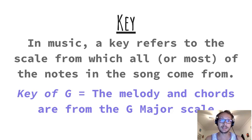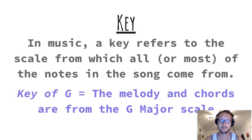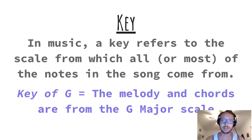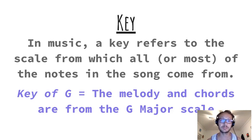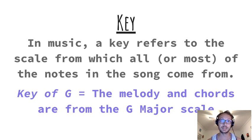A key in music refers to a scale from which all or most of the notes in a song come from. Songs can change key at any point, but the idea is that if a song is in the key of G, we can assume the melody, the scale, and the chords all come from the G major scale — everything is centered around that scale, which is why it all sounds like it fits together.